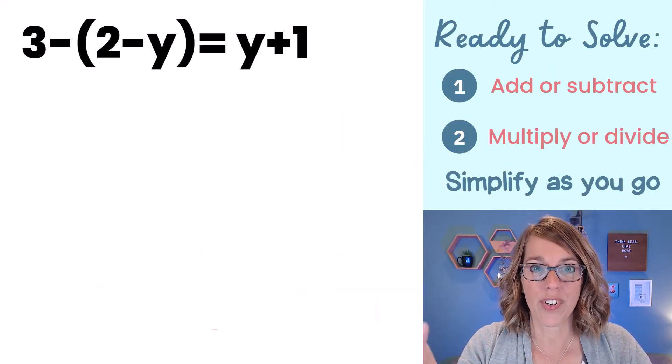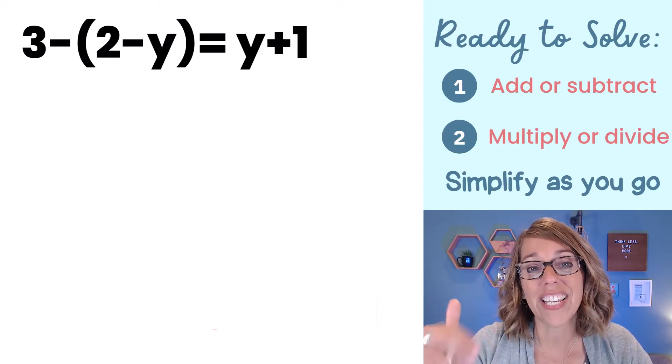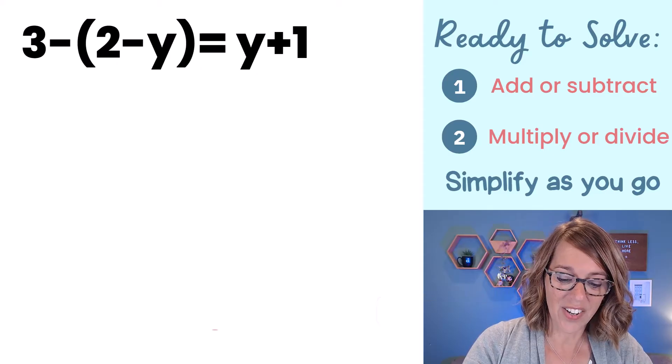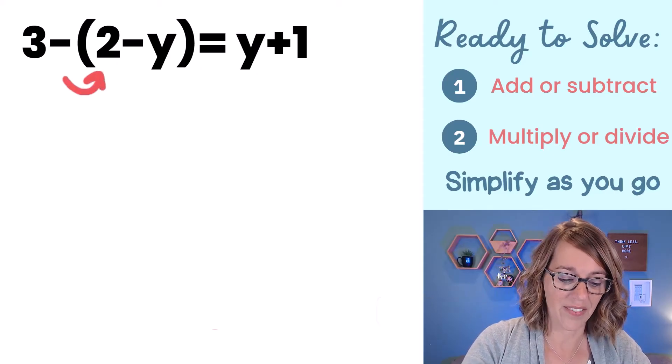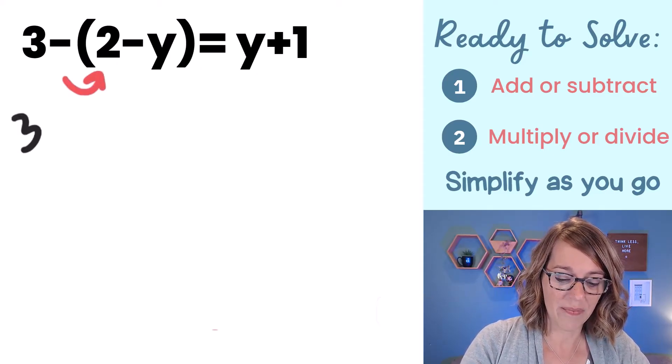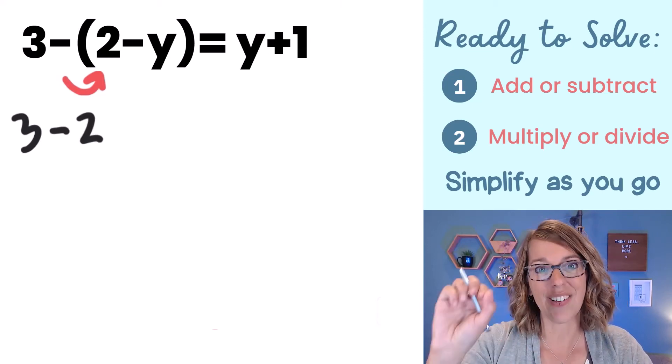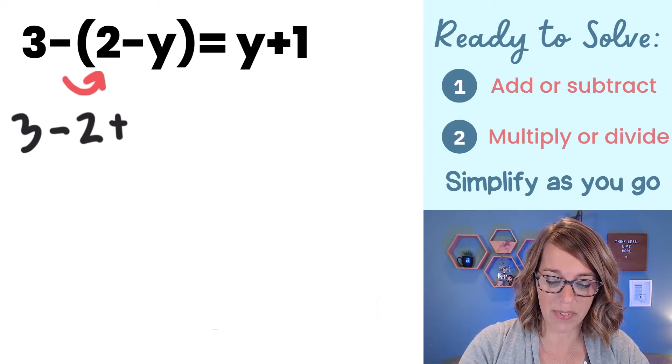Now you know that the variables are going to drop out, right? So the question really is, are we going to get a true equation or a false equation? I need to start by distributing that negative sign. So I get 3 and then distributing the negative, negative times 2, and then negative times negative y, that's going to be plus y.